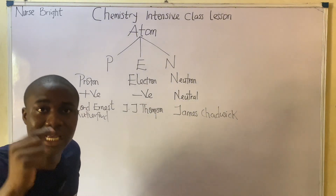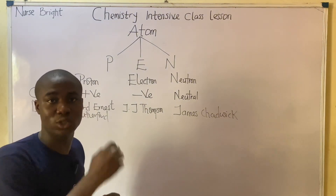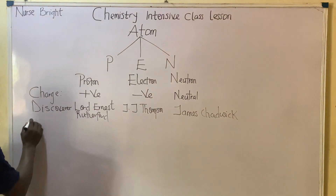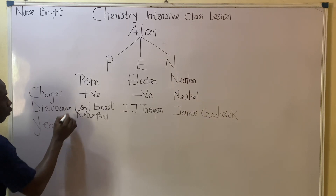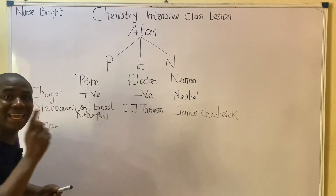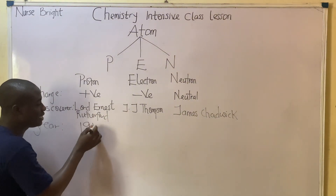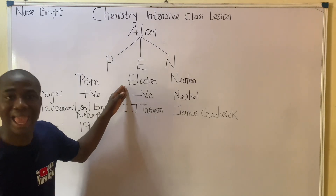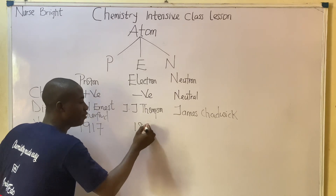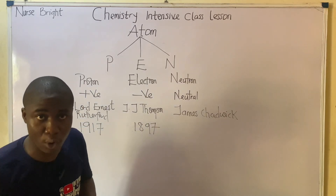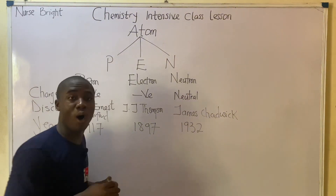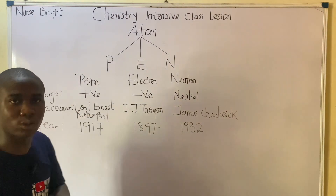These subatomic particles were also discovered in different years. Protons were discovered in the year 1917, electrons were discovered in the year 1897, and neutrons were discovered in the year 1932.